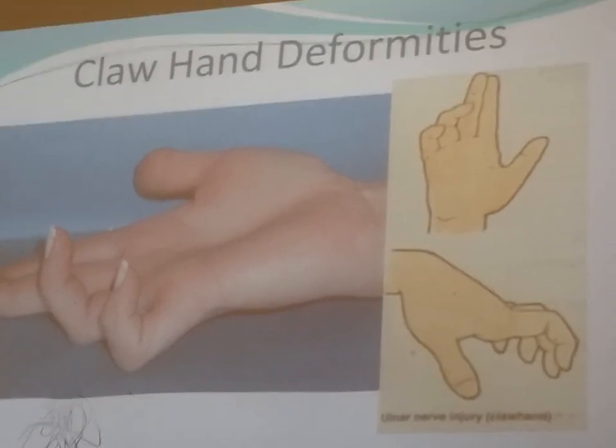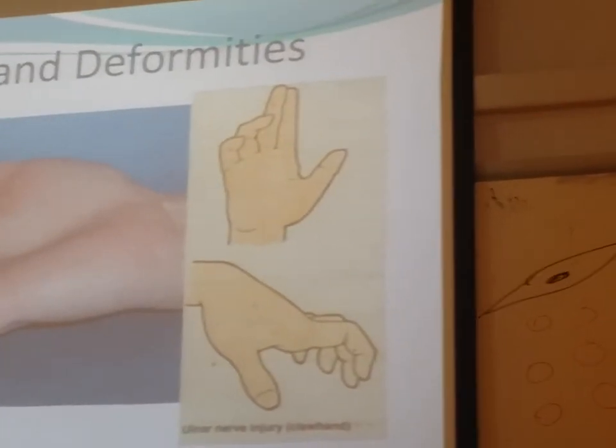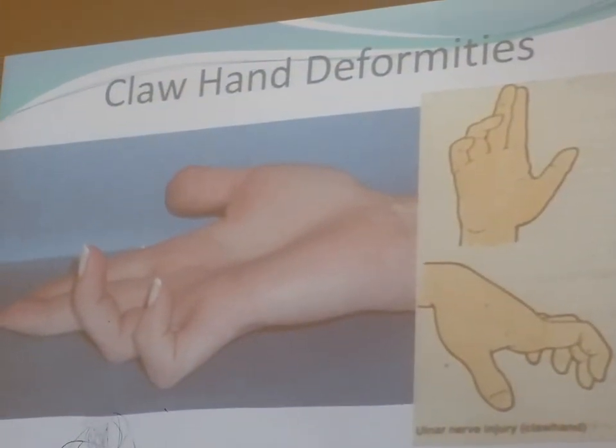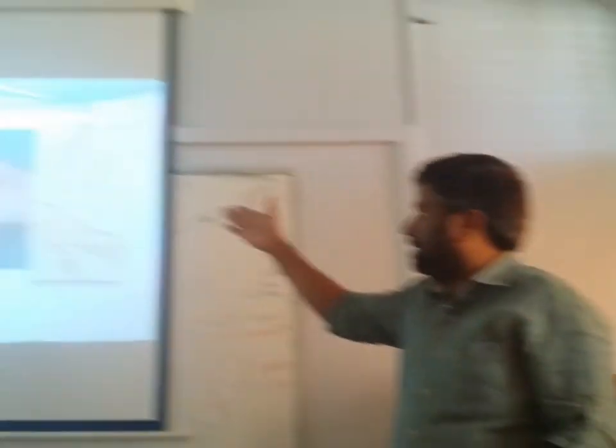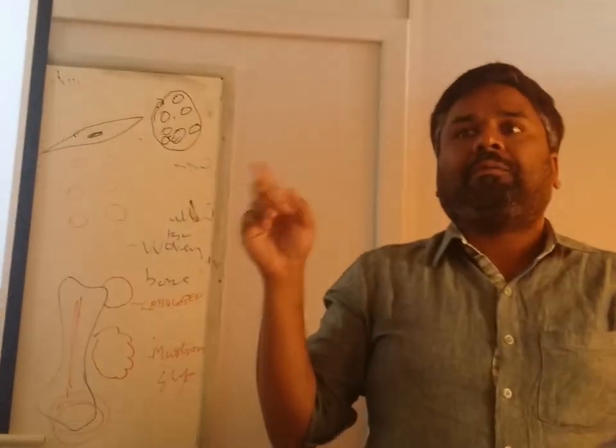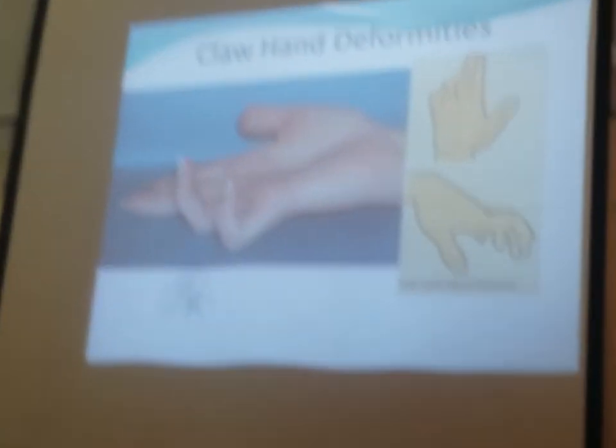When there is injury to the ulnar nerve — especially in fractures of the medial epicondyle — it causes claw hand deformity, which looks exactly like the claws of an eagle. To summarize the deformities: ape hand deformity is from median nerve injury, claw hand deformity is from ulnar nerve injury, and wrist drop is from radial nerve injury. Remember these three.